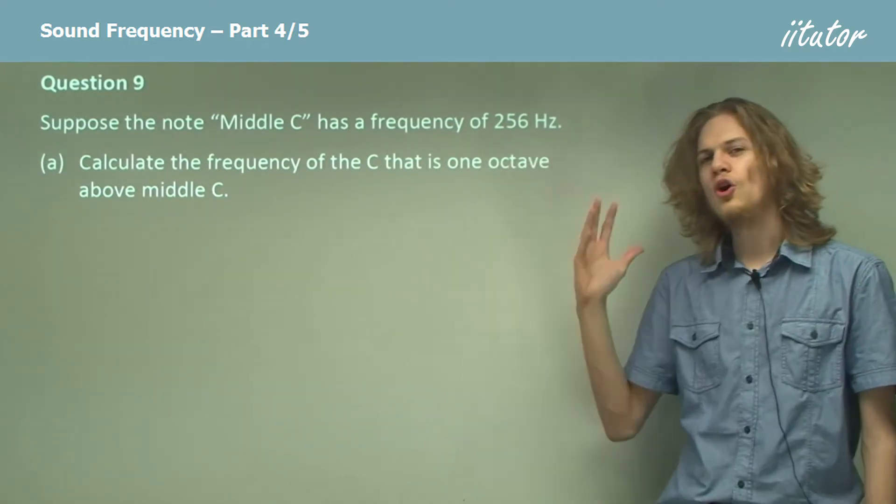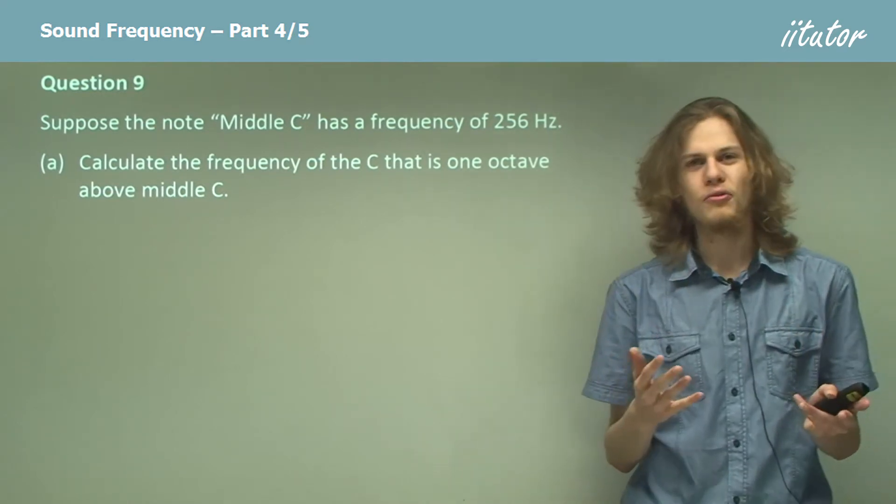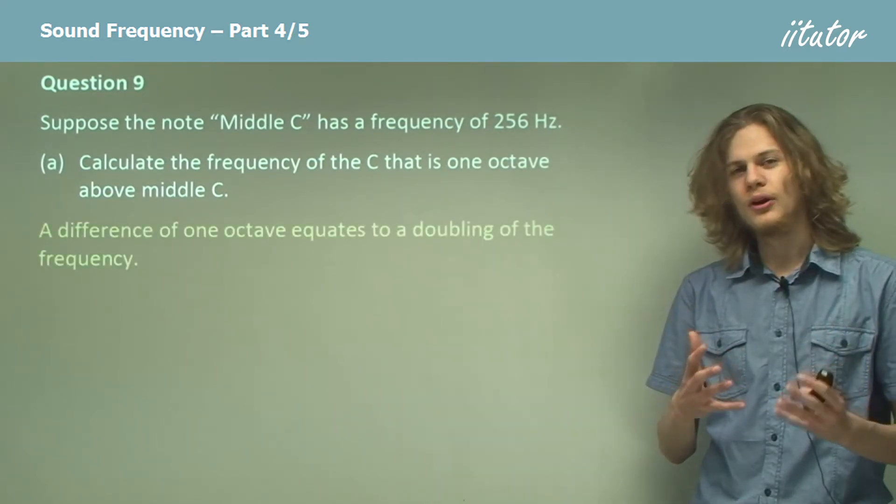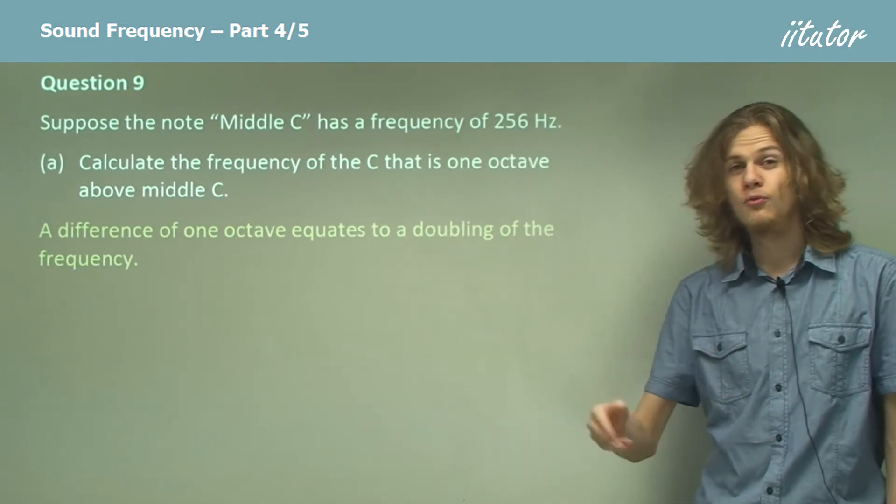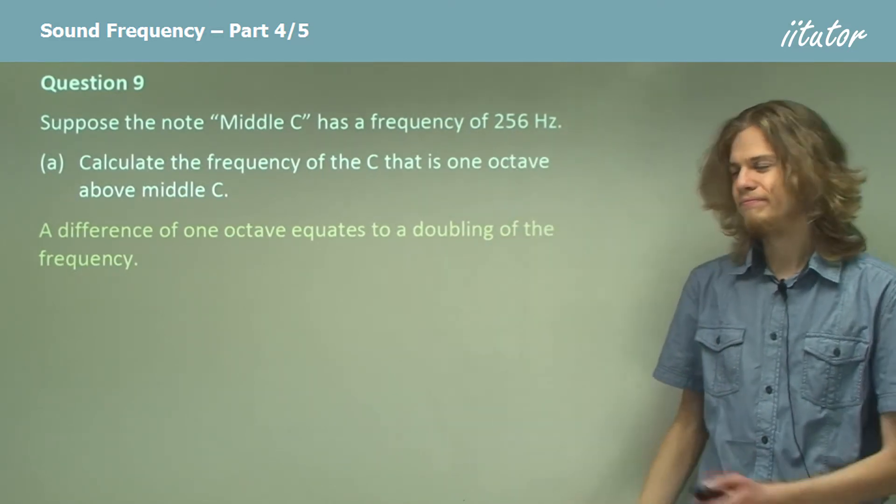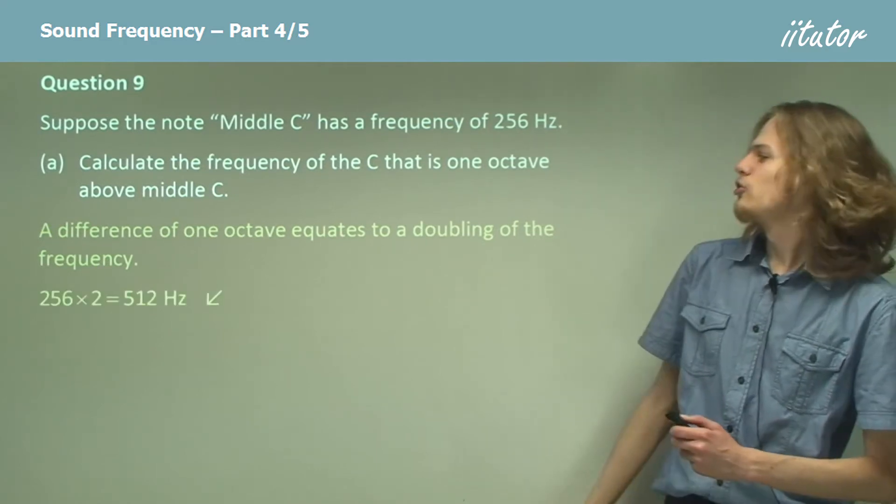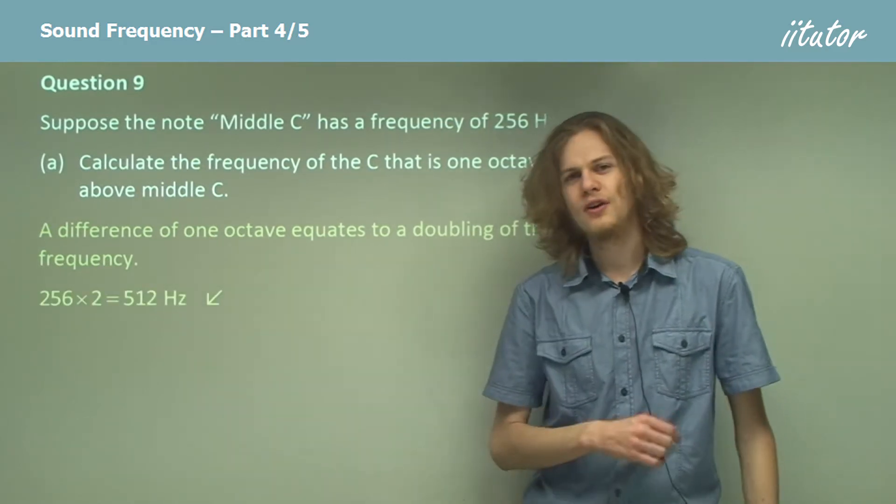We know that one octave corresponds to a doubling of the frequency. We know that the frequency of our starting note middle C is 256 Hertz, so to move one octave up we just double it. 256 times 2 is 512 Hertz.